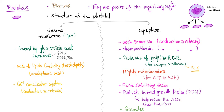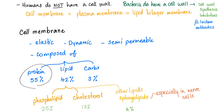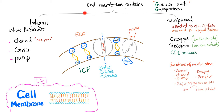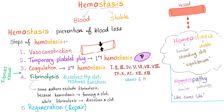Platelet receptors are proteins, and they are part of the glycoprotein coat on the outside surface of the platelets, and the P2Y12 is no exception. Cell membrane proteins are either integral or peripheral. Most receptors are peripheral proteins.